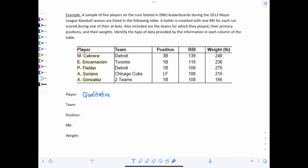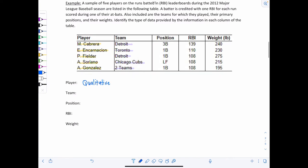The team. So again, in the second column, we see the team names listed. Detroit, Toronto, Detroit, Chicago Cubs, and then two teams. Again, this is non-numerical data. So this is qualitative.